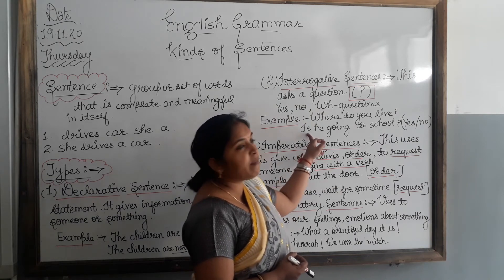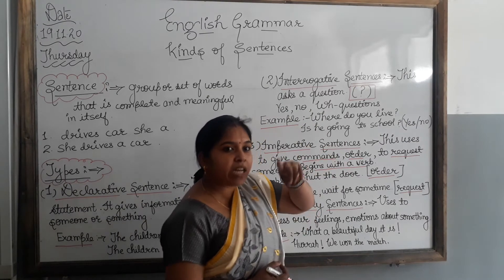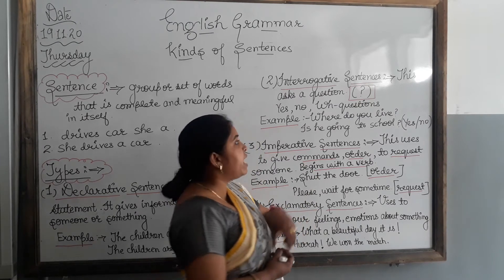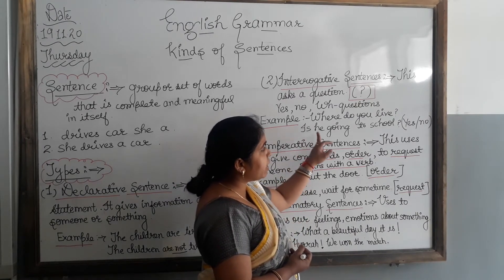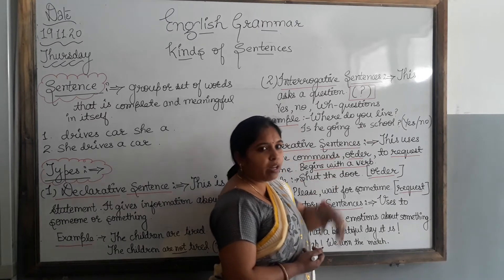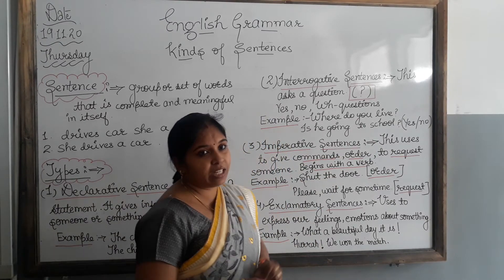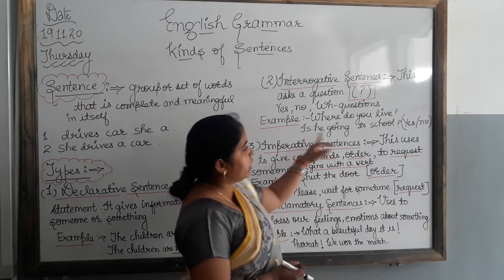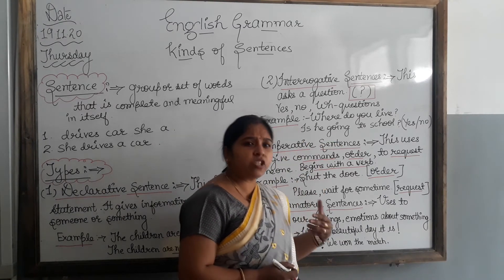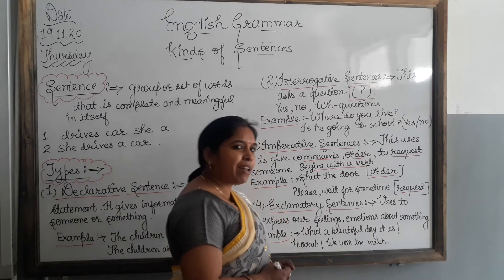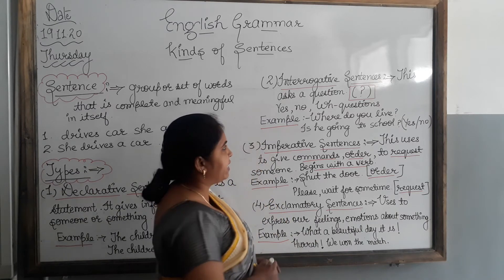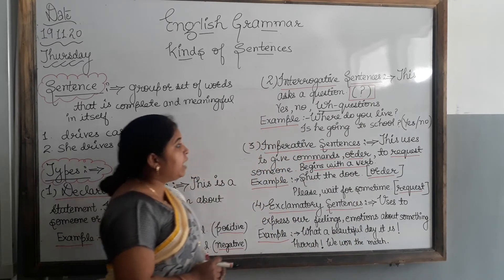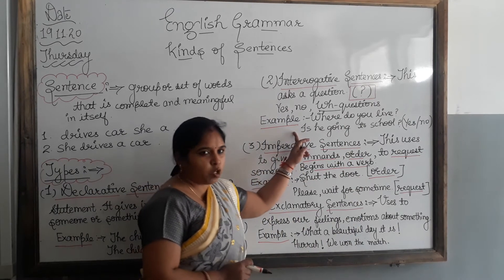We can also make interrogative sentences using helping verbs, when the answer will be in yes or no. For example: 'Is he going to school?' When I ask this question to someone, I will get the answer in yes or no — 'Yes, he is going to school' or 'No, he is not going to school.' So in this manner we can make interrogative sentences with the WH family and with the helping verbs.